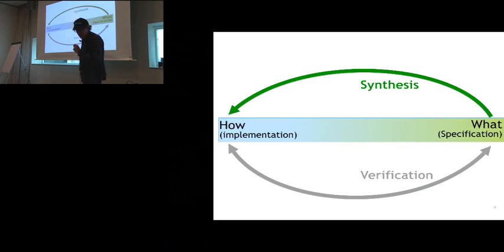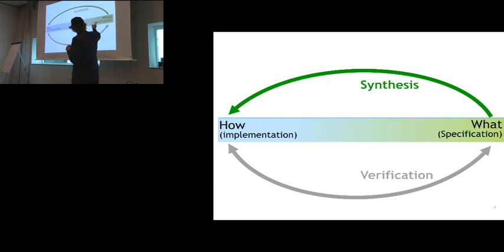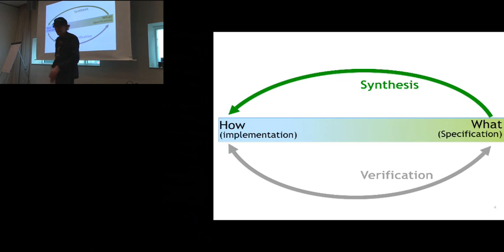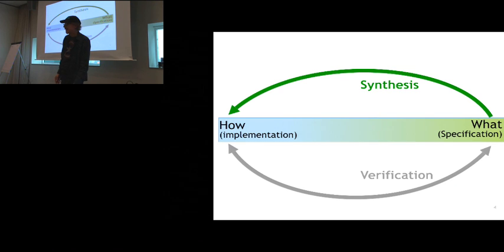There's this other idea called synthesis that's been talked about over the years — it goes directly from the what to the how. You generate the how from the what. If you have a complete specification, then you can generate code sometimes. That's very, very hard — harder than verification, I think. So that's not very common either.